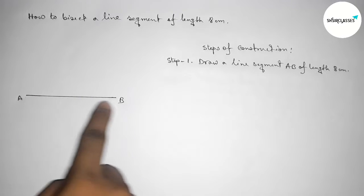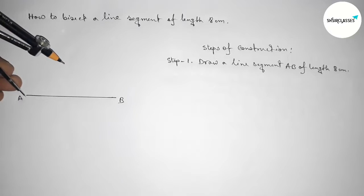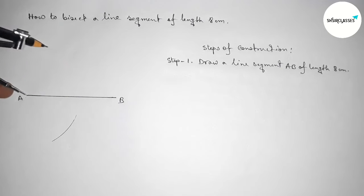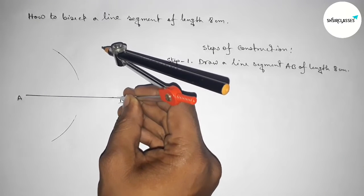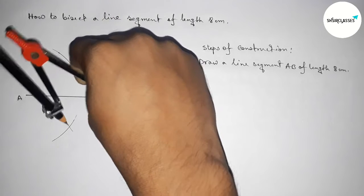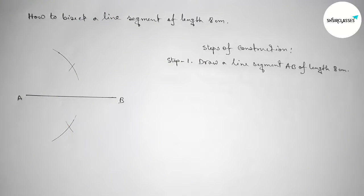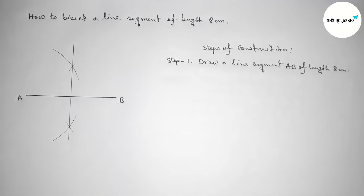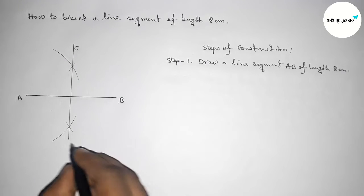Now we have to bisect the line AB. So putting the compass on the point A and taking greater than half of AB, drawing an arc here and drawing an arc here. Again with the same length, putting the compass on the point B and cut here and cut here. So now joining this line, taking point here C and...